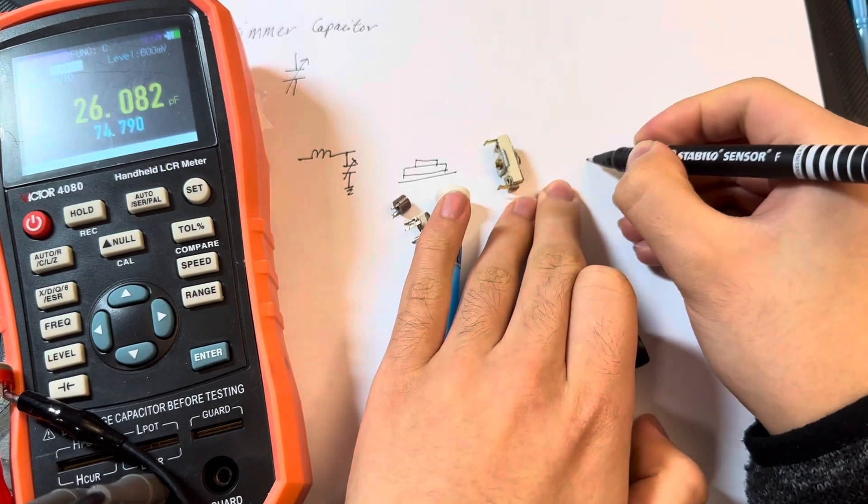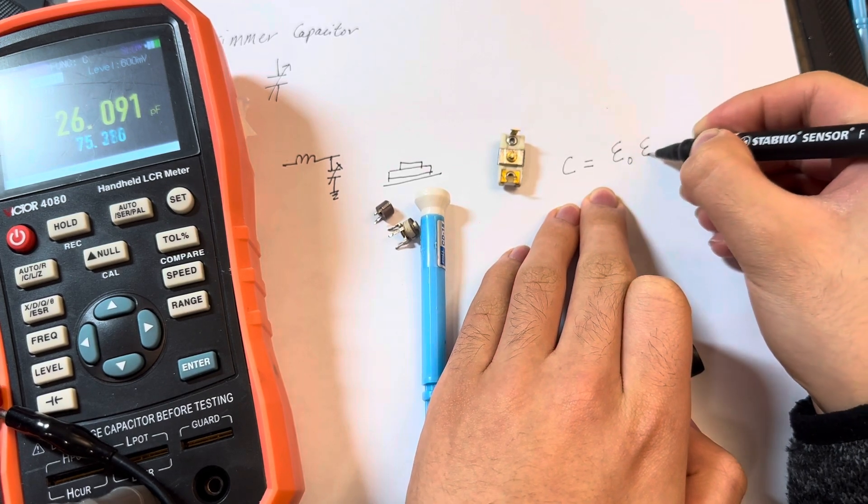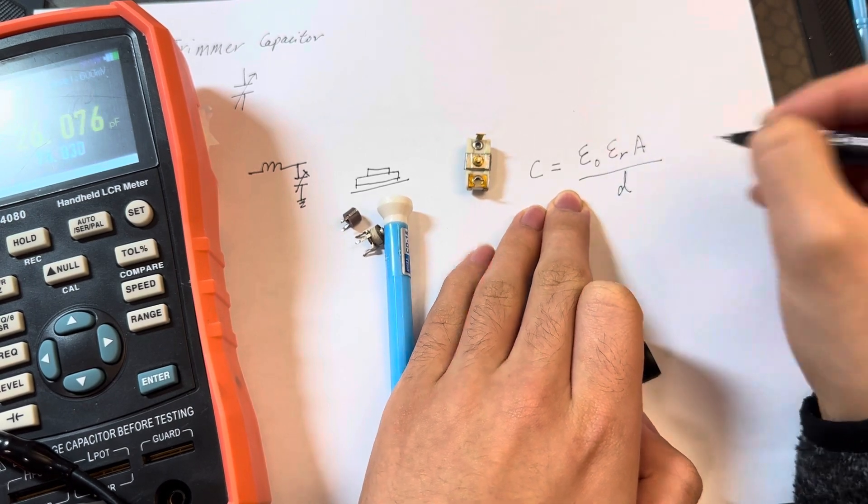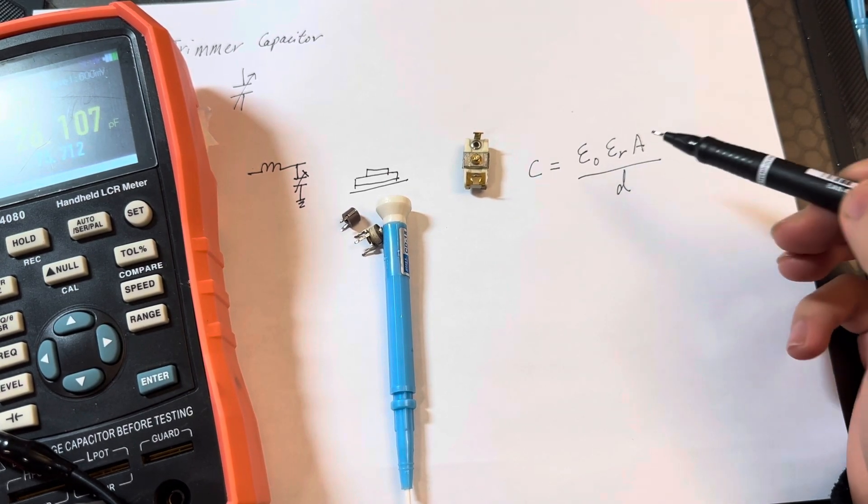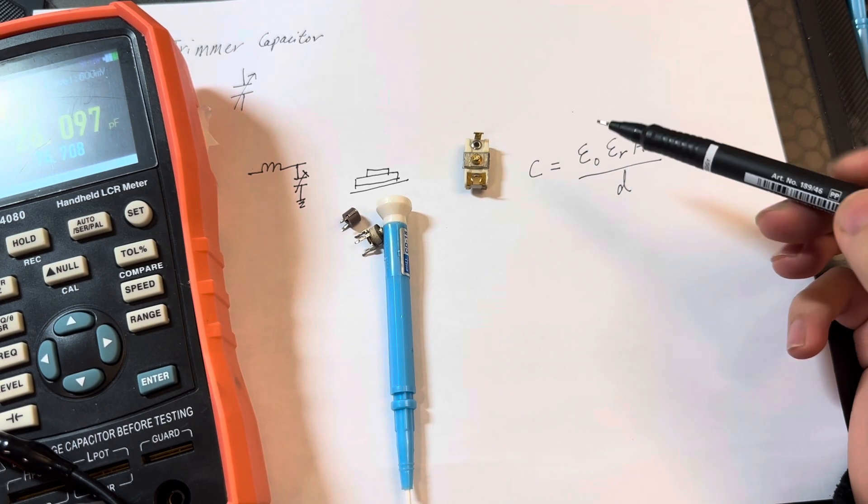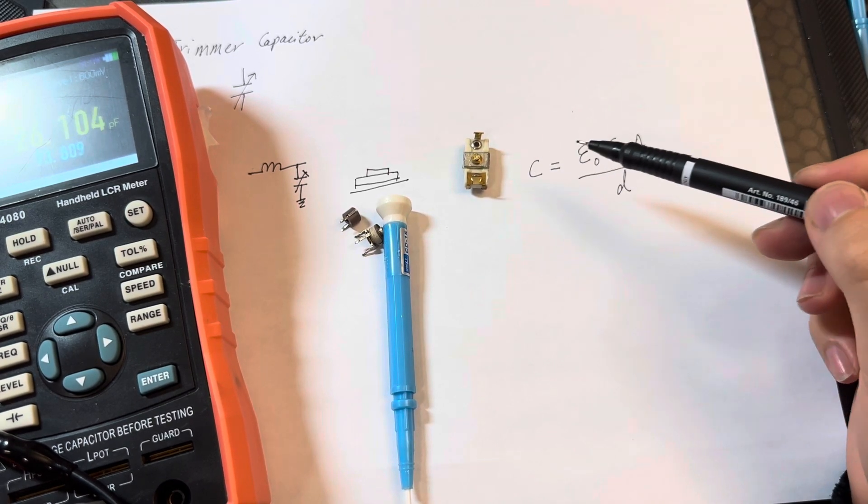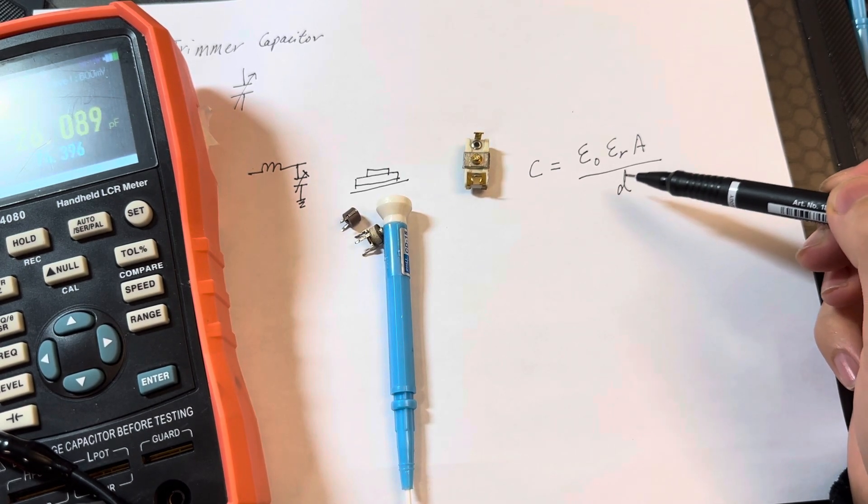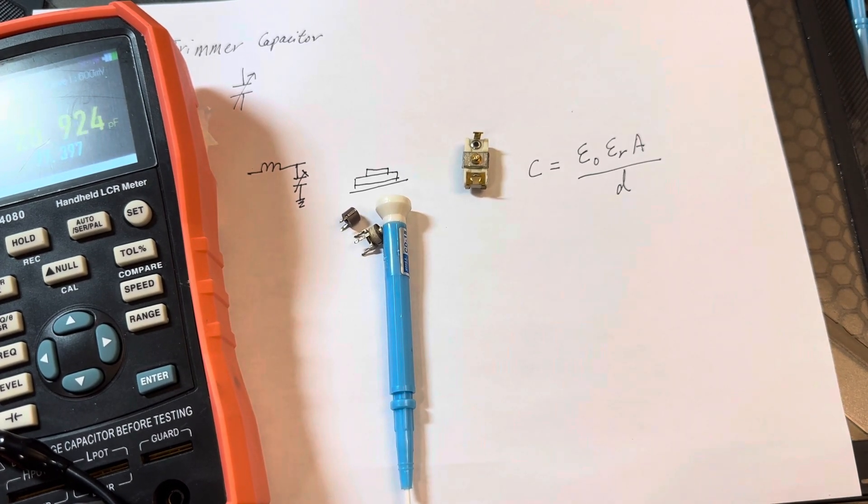Capacitors follow this equation: C equals epsilon naught times epsilon r for the material, times the area of the plates, over the dielectric distance d. So the closer you get the plates to each other or the larger you make the areas, the higher the capacitance will be. If you increase the plate distance d, the capacitance value decreases. If you make d, the distance of plate separation, smaller, you get more capacitance, which is what happens with mica.